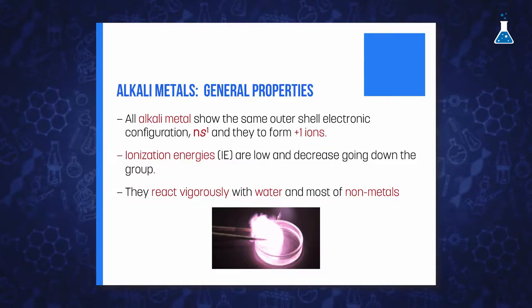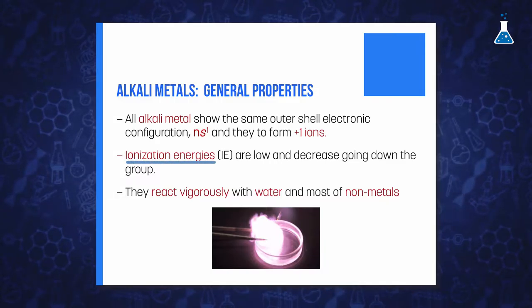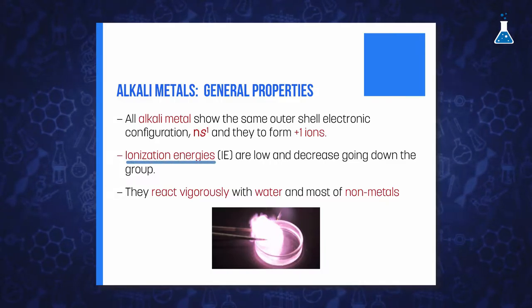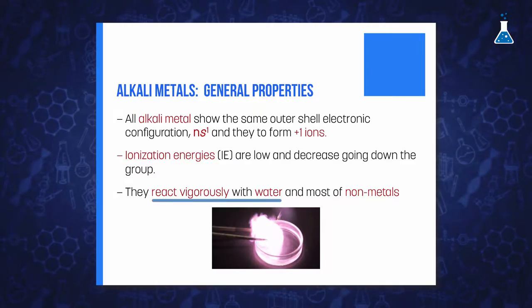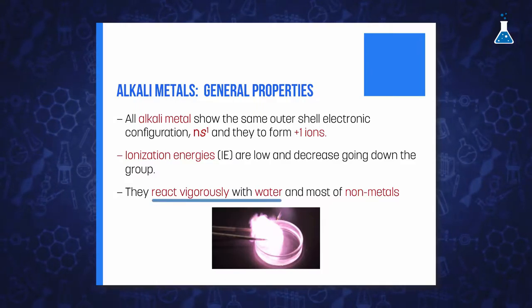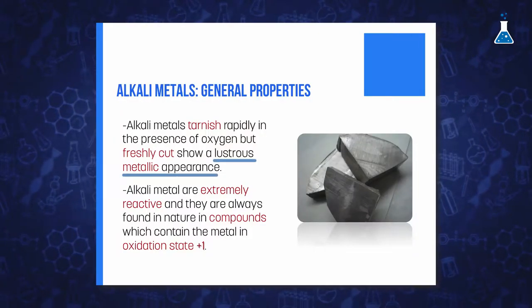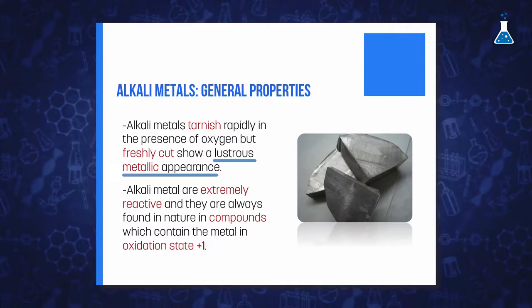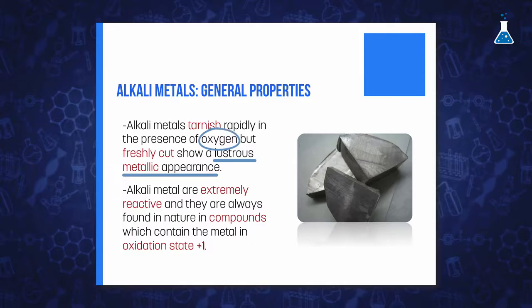All elements of the group are reactive metals with low values of the first ionization energy, which decreases going down along the group. They react vigorously with water producing hydrogen gas and they also react with most non-metals. With halogens the reaction is vigorous and even explosive in some cases. When freshly cut they show a lustrous metallic appearance that tarnishes rapidly in the presence of air by the reaction with oxygen and moisture.